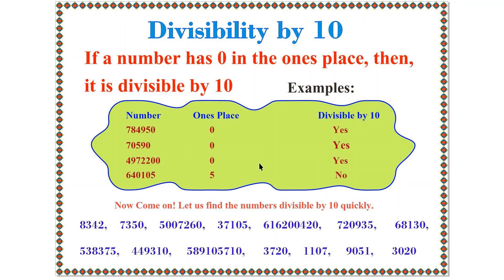Now we are moving towards divisibility by 10. The rule is: if a number has 0 in the 1s place, then it is divisible by 10. It is a very simple rule — we only need to look at the 1s place. If there is a 0, the number is purely divisible by 10.